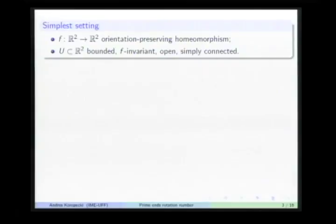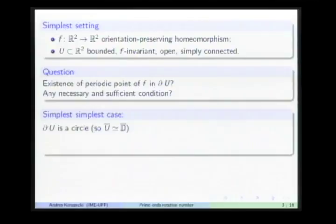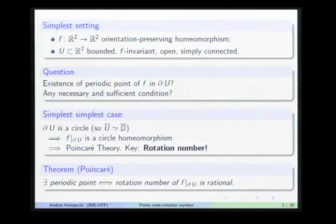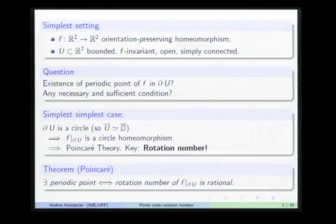The simplest setting is in the plane, starting with a simply connected, bounded open set. In the ideal case, the closure of the open set is a topological disk, so the boundary is a circle. Then we have a circle homeomorphism, completely classified by Poincaré's theory, with the rotation number characterizing the existence of periodic points: there is a periodic point if and only if the rotation number is rational.